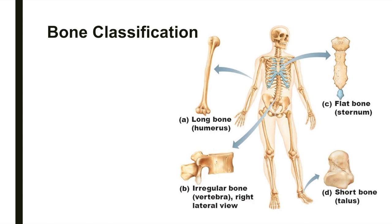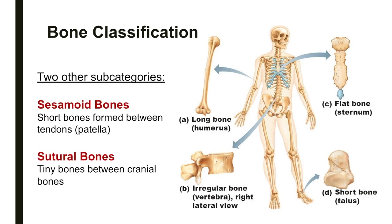Some anatomists also recognize two other subcategories of bones. Sesamoid bones are special types of short bones formed within tendons; the patella, or kneecap, is an example. Sutural bones are tiny bones found between cranial bones.